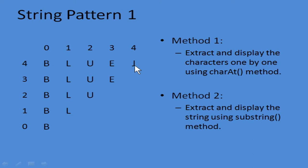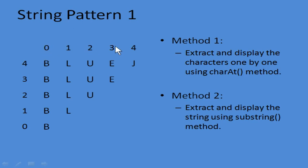Since it is decreasing and the first row has the complete string, you start with index 4. Then the next row is 3, then 2, then 1, and 0. So i will start from 4, end at 0, and decrease. For the j value, you can see 'BlueJ' going from left to right — it is increasing. So j starts from 0 and ends at 4, increasing. Inside the loop you use charAt() with j to extract each character.